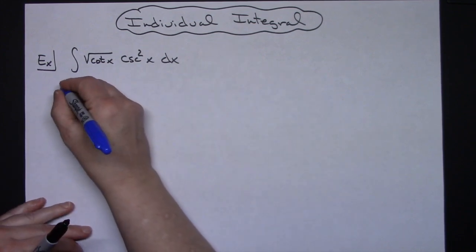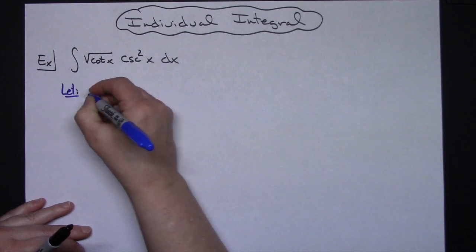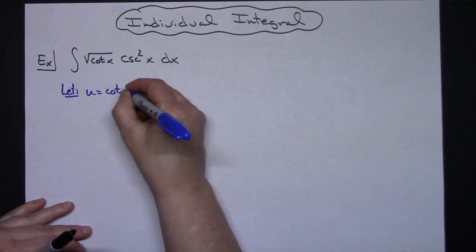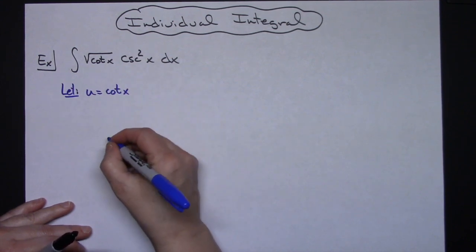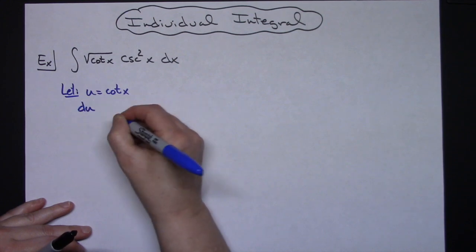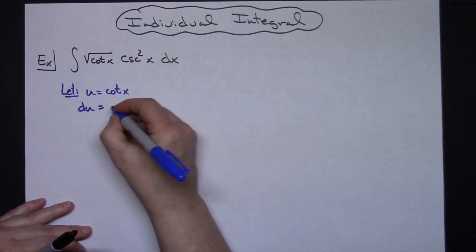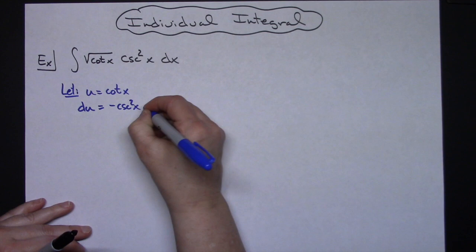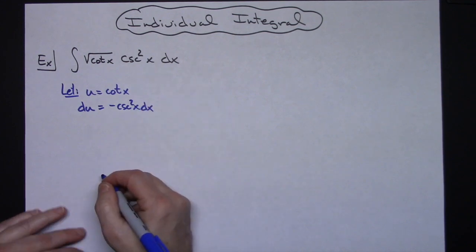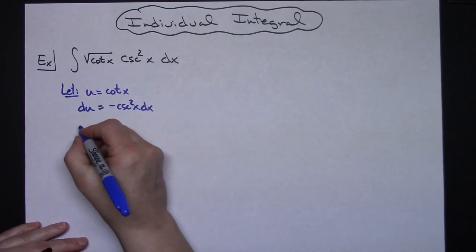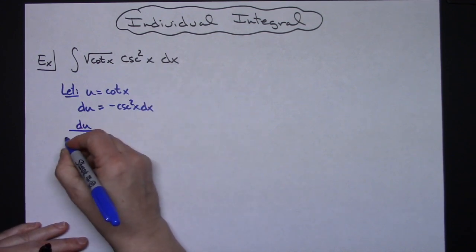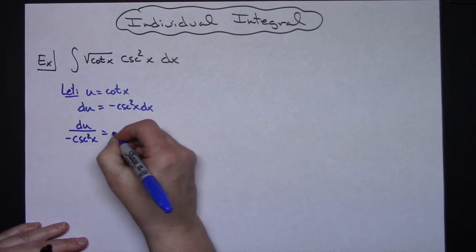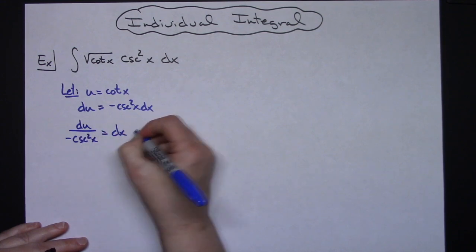We're going to start by letting u equal cotangent x. Taking the derivative of both sides gives du equals negative cosecant squared x dx. Solving for dx gives du over negative cosecant squared x.